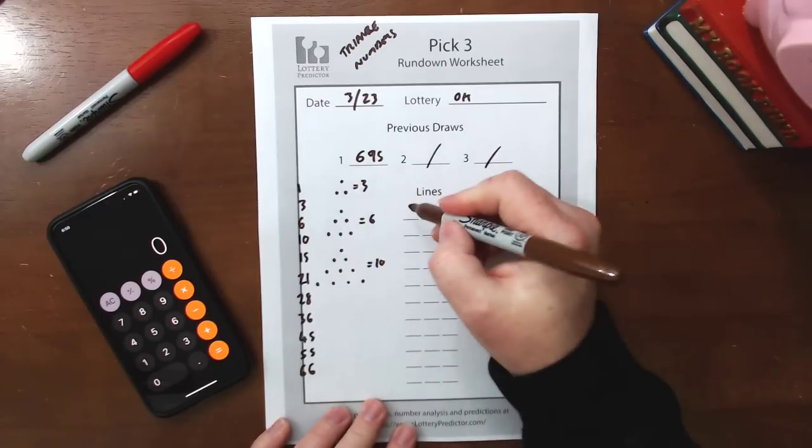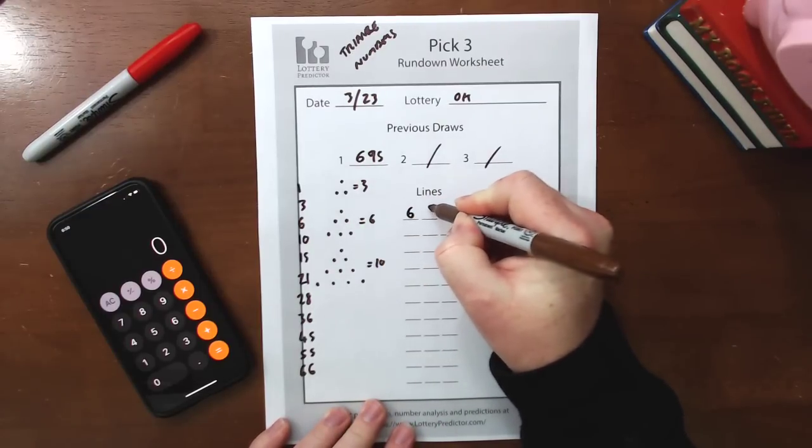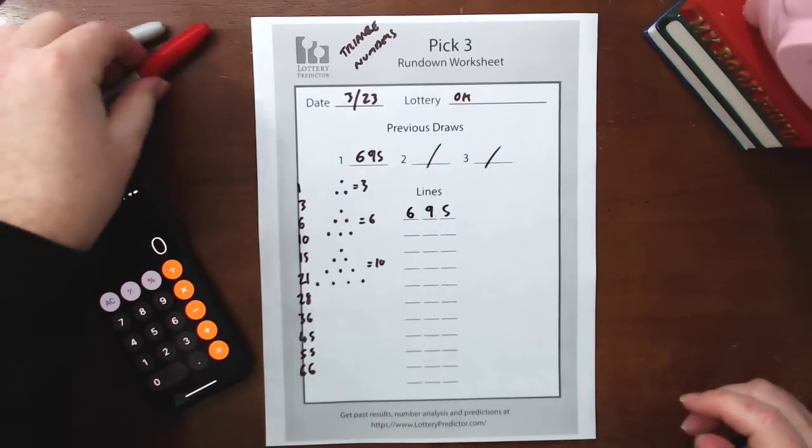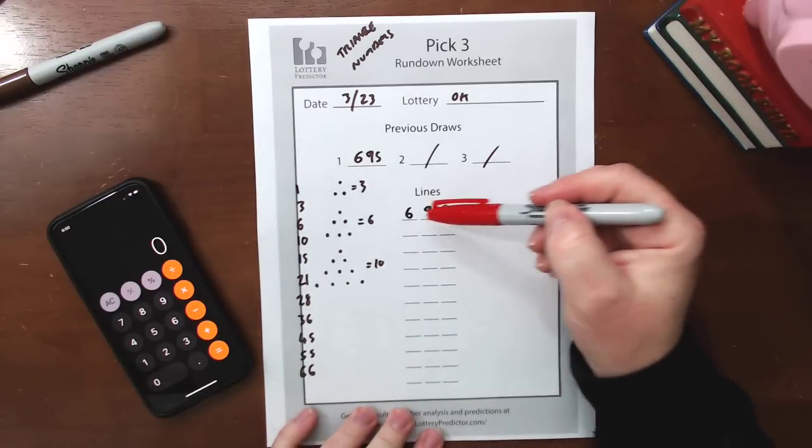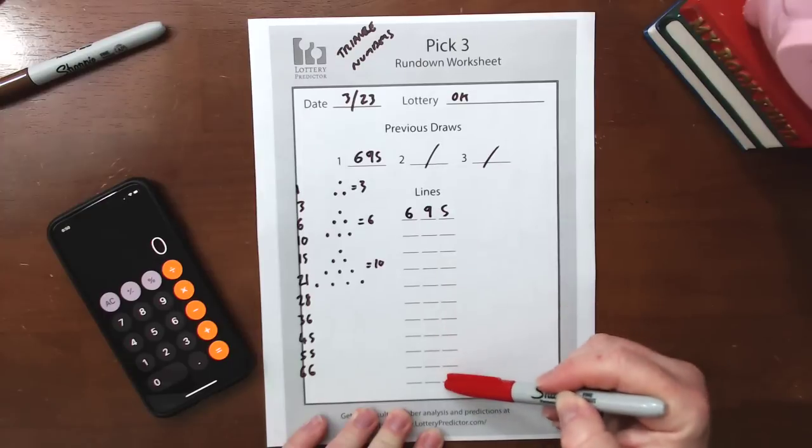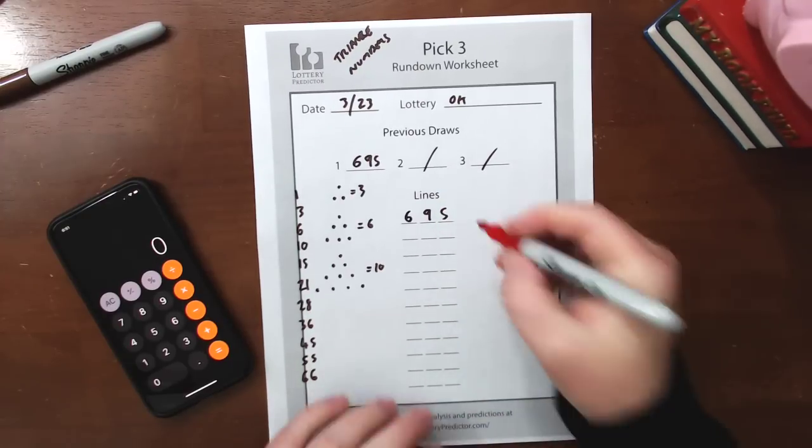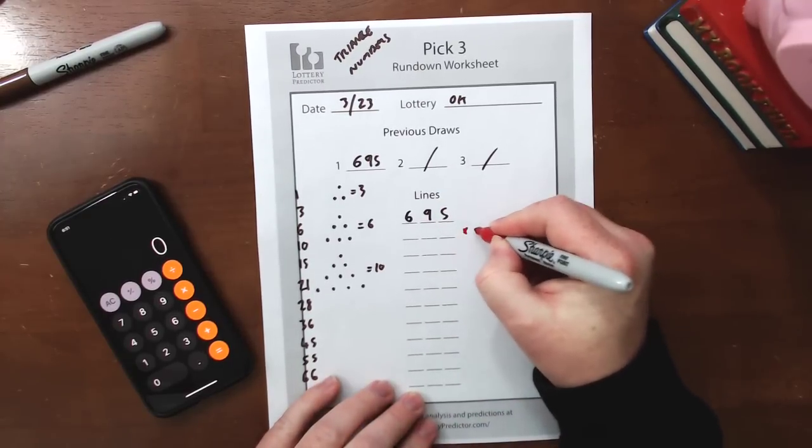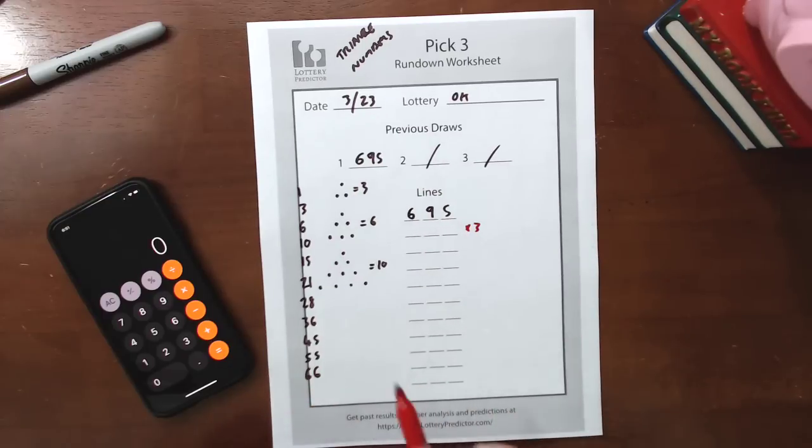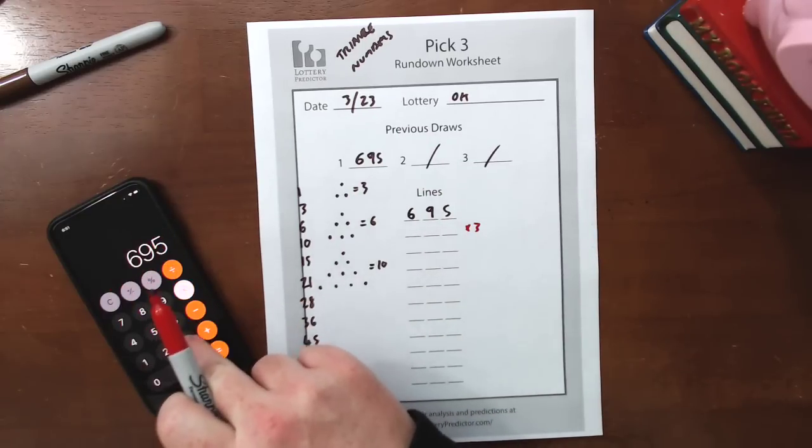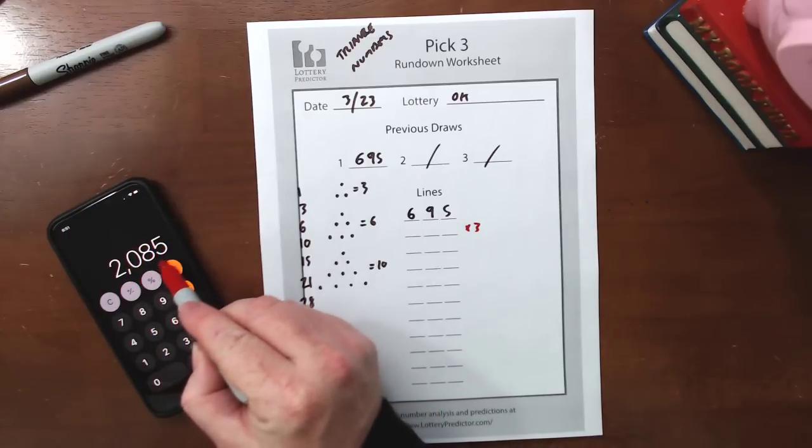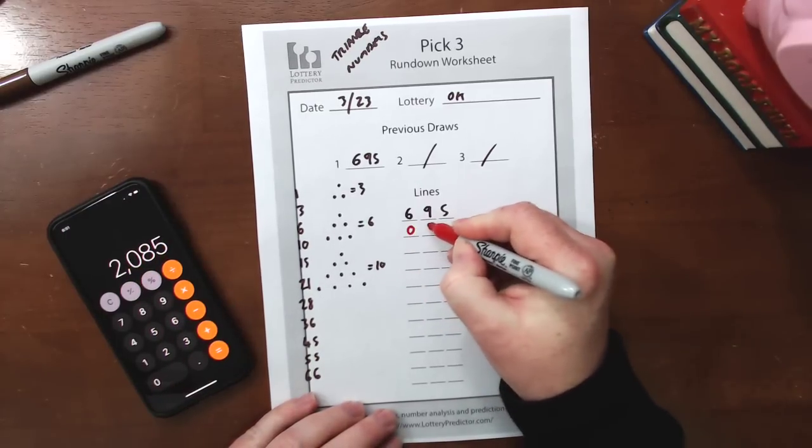So what we're going to do is take this 695 and put it on the first line here. Then you're going to want to get a calculator, and you definitely want a calculator for this, because we're going to take this 695 and multiply it by each triangle number as we go down the lines. So we're going to multiply it by 3. We're going to skip one, because one would just give us 695. So we take 695, multiply it by 3, it gives us 2085. Because it's Pick 3, we only need these three numbers here: 085.